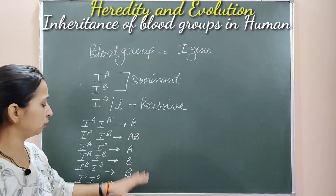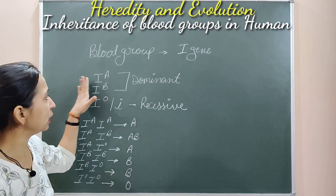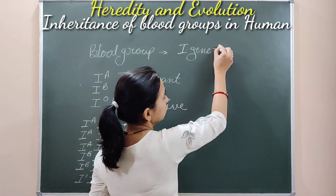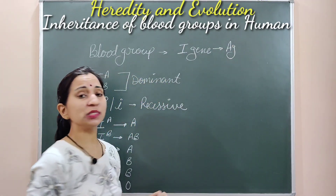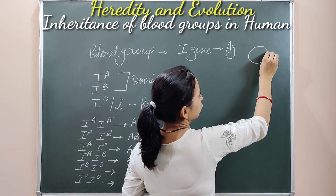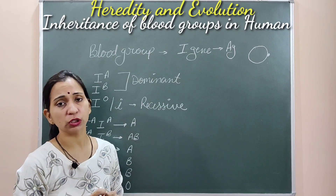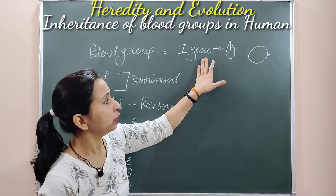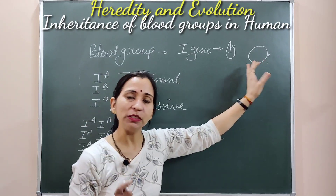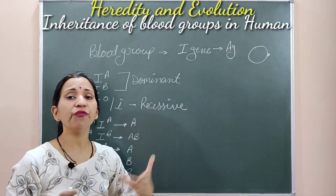The reason these blood groups are determined this way is that I genes are responsible for making a particular type of antigen on the plasma membrane of RBCs. In our blood, RBCs are present, and on the surface of RBCs, some particular types of protein structures are present. These proteinaceous structures are known as antigens. So I genes control what kind of antigens are formed on the surface of RBCs, and on that basis, different blood groups exist.